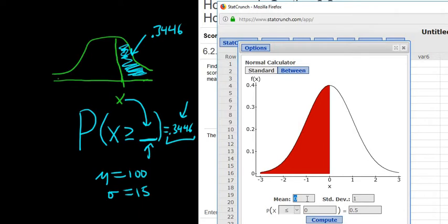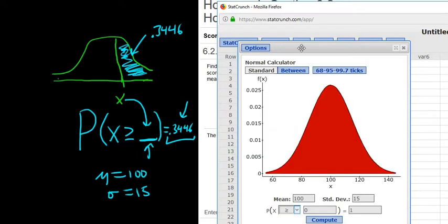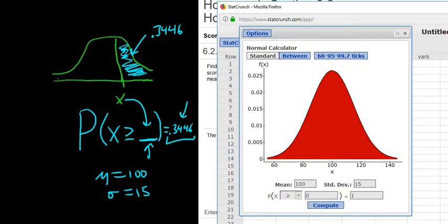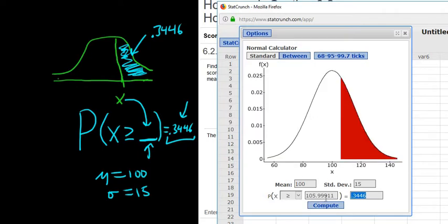All right. So the mean is 100, standard deviation is 15. Then it's greater than or equal to. And we want to enter this area in the second box here, so 0.3446. It's greater than. We've entered the area in the second box. Everything looks OK. We just hit Compute, and there's the answer.